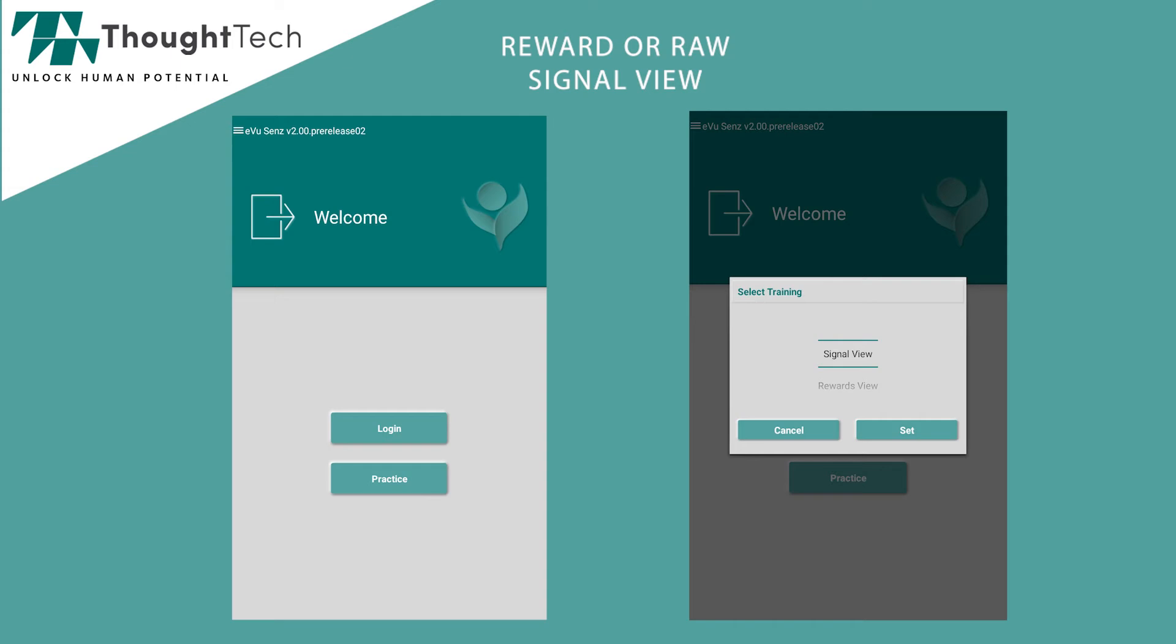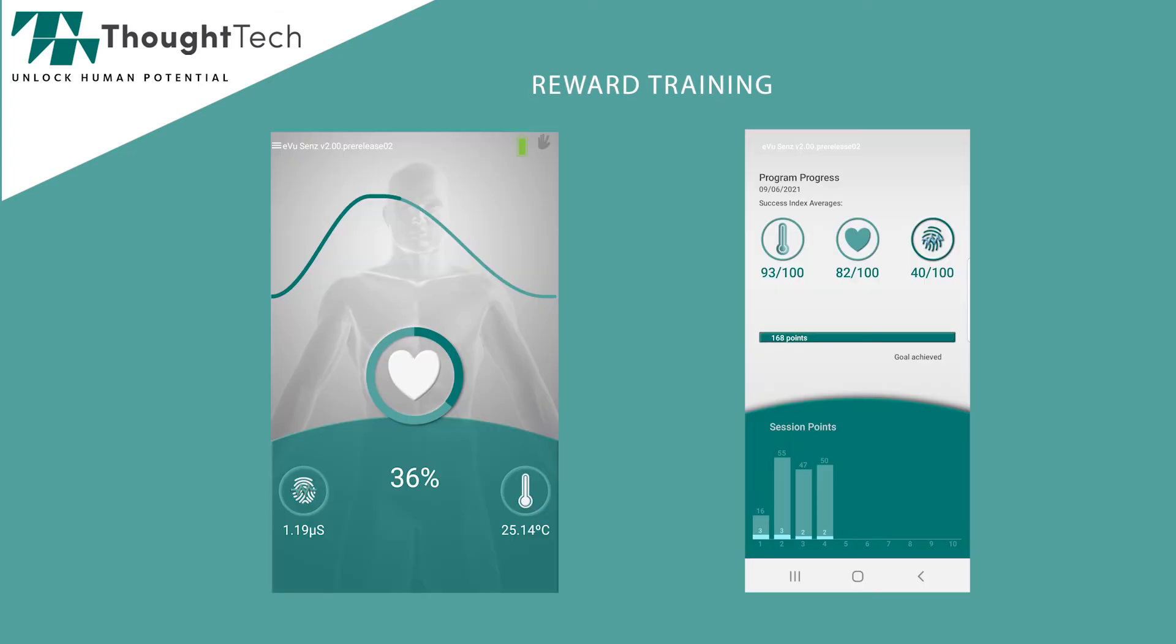There are two main options: user-independent reward training, and a raw signal view. The reward training allows the user to observe their success in achieving a state of relaxation and coherence as they accumulate reward points, while following a configurable breath pacer.